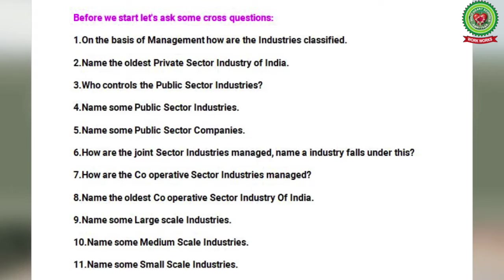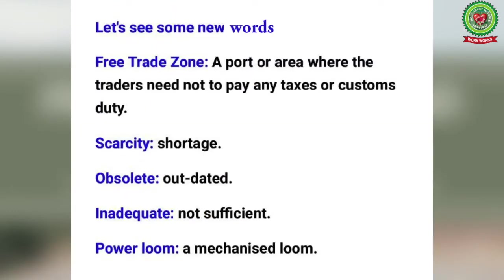Sixth: how are joint sector industries managed, and name an industry that falls under this category. Seventh: how are cooperative sector industries managed? Eighth: name the oldest cooperative sector industry of India. Ninth: name some large-scale industries. Tenth: name some medium-scale industries. Eleventh: name some small-scale industries. Please try to find out the answers and revise them. Now let's see some new vocabulary words.